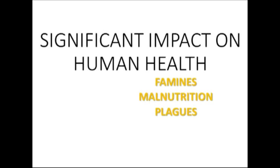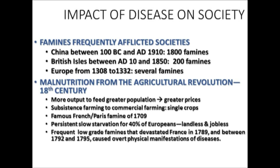At a large scale, the most significant vectors influencing human health have been famines, malnutrition, and plagues. Famines have frequently affected different societies — the Chinese, for example, were affected from 100 BC to about 1910 AD by a total of 1,800 famines. The British Isles experienced 200 famines. In Europe, from 1308 to 1332, just prior to the major plagues, several famines swept through. Malnutrition also resulted in the 18th century from the Agricultural Revolution.